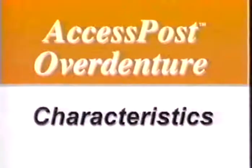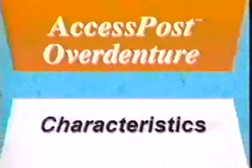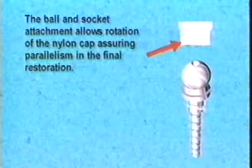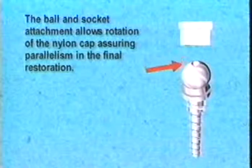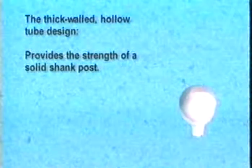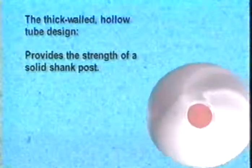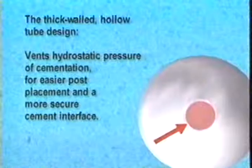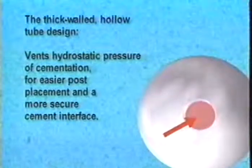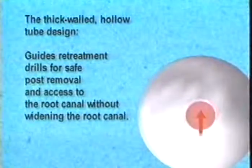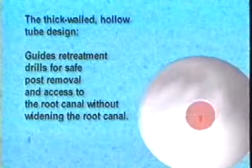Access Post Overdenture characteristics: The ball and socket attachment allows rotation of the nylon cap, assuring parallelism in the final restoration. The thick-walled hollow tube design provides the strength of a solid shank post, and vents hydrostatic pressure of cementation for easier post placement and a more secure cement interface. It also guides retreatment drills for safe post removal and access to the root canal without widening it.